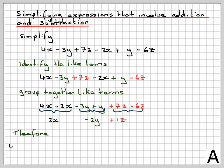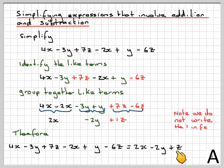Therefore, if I want to simplify 4x minus 3y plus 7z minus 2x plus y minus 6z, it's equal to 2x minus 2y plus z. Note that we don't write the 1 in front of the z. So this is the final answer, 2x minus 2y plus z.